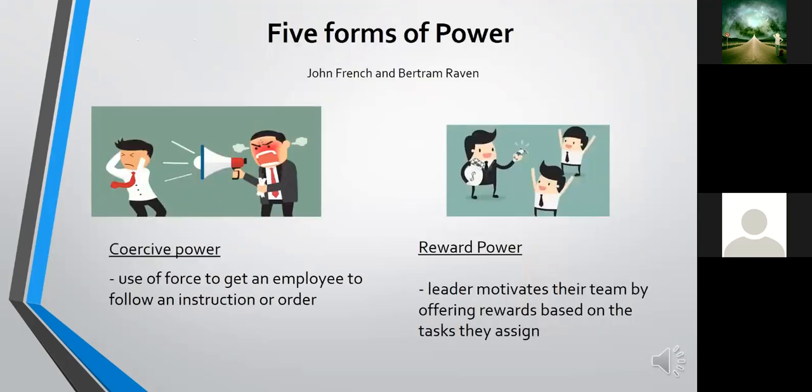The main study supporting this theory was conducted by John French and Bertram Raven in 1959. They identified five forms of power: coercive power, reward power, referent power, legitimate power, and expert power. Let's discuss first the coercive power.